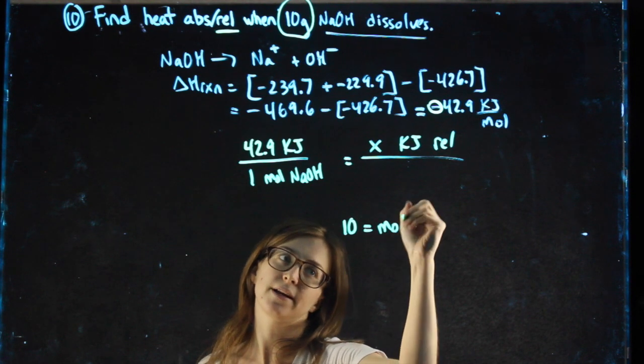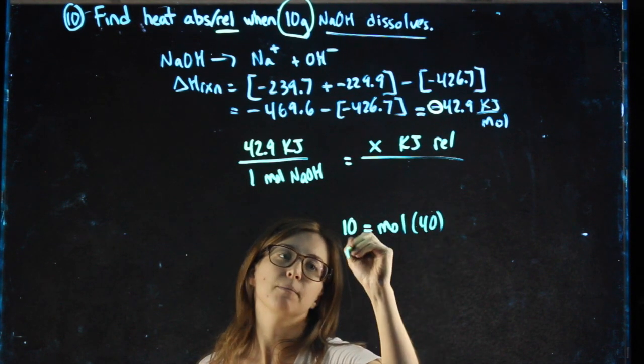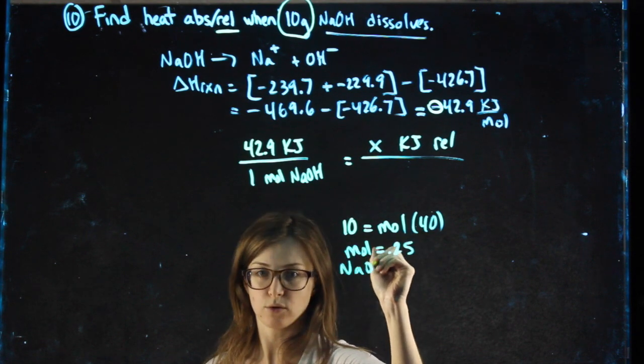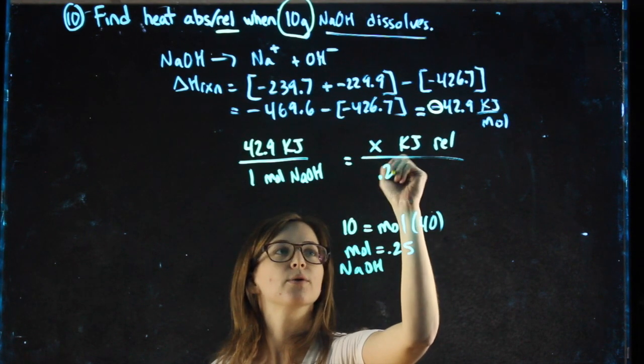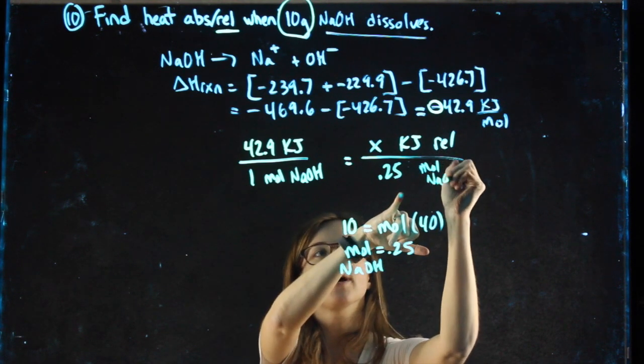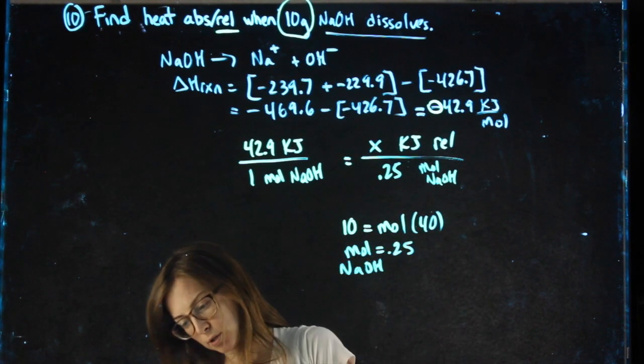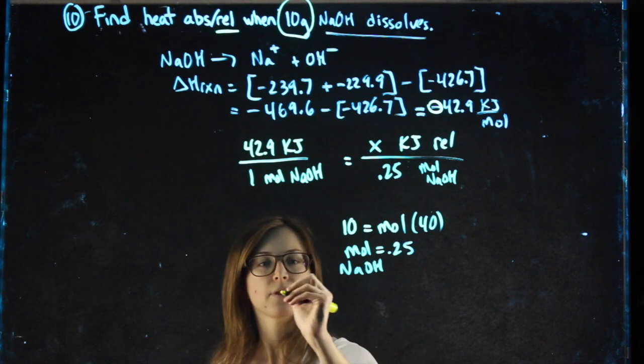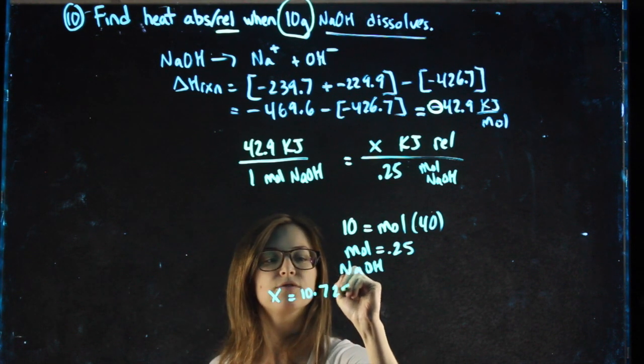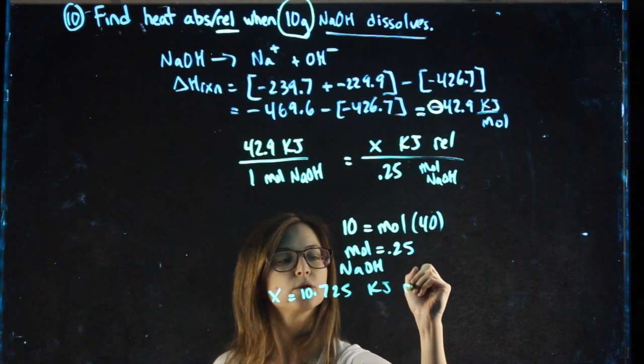Taking my 10 grams of NaOH and finding my moles, I get 0.25 moles of NaOH. Moles of NaOH match moles of NaOH. Cross-multiplying, I end up with 10.725 kilojoules released.